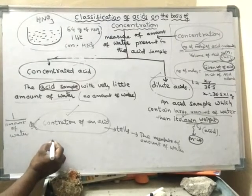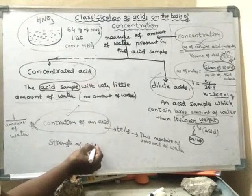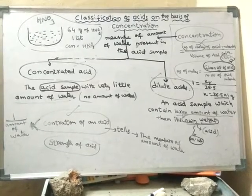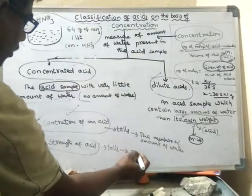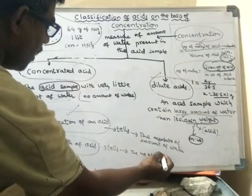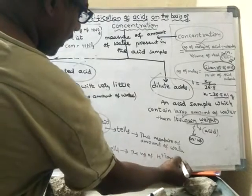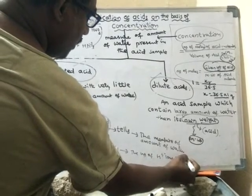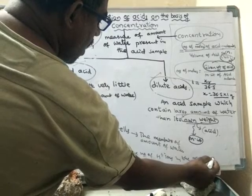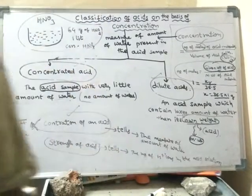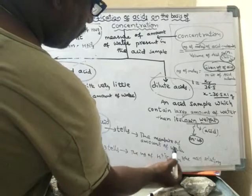We have also discussed the strength of acid. The strength of acid tells about the number of H⁺ ions in the acid solution. Concentration of acid tells the amount of water in the acid solution.